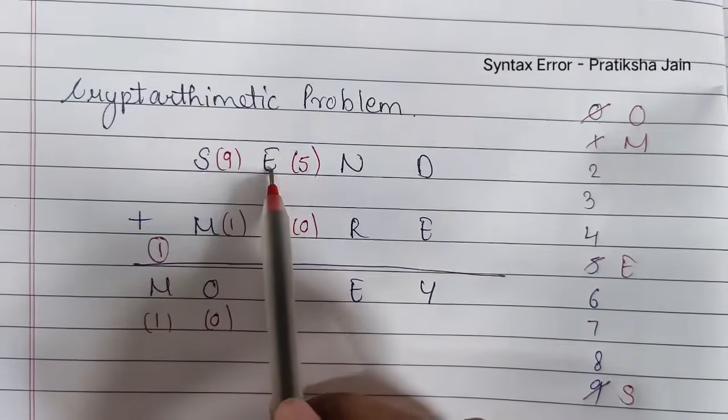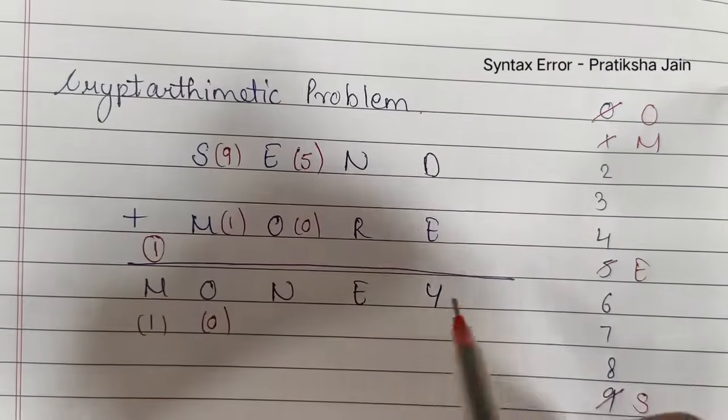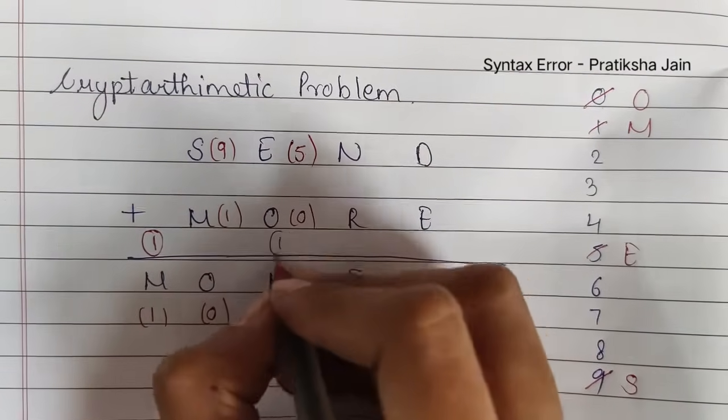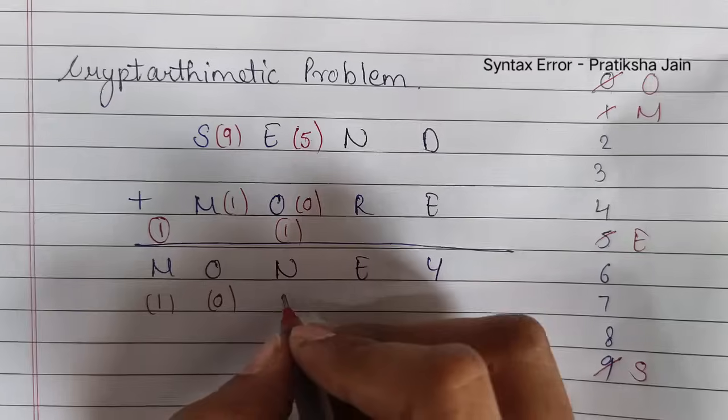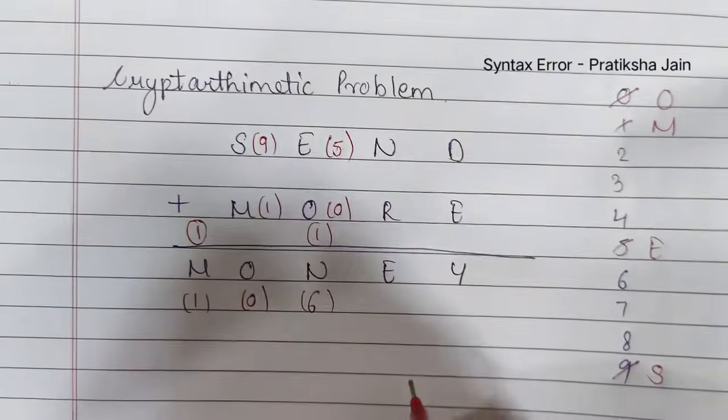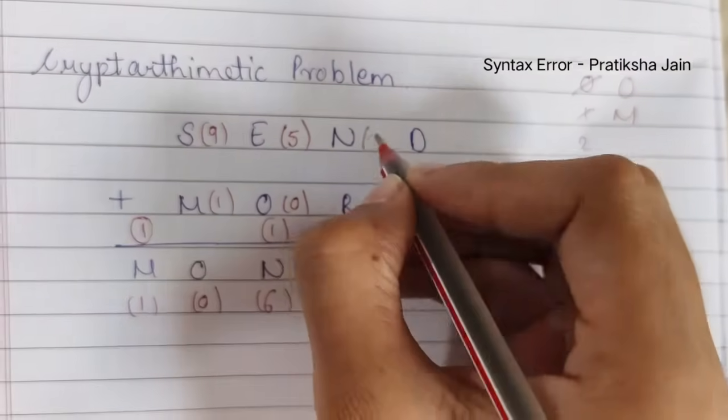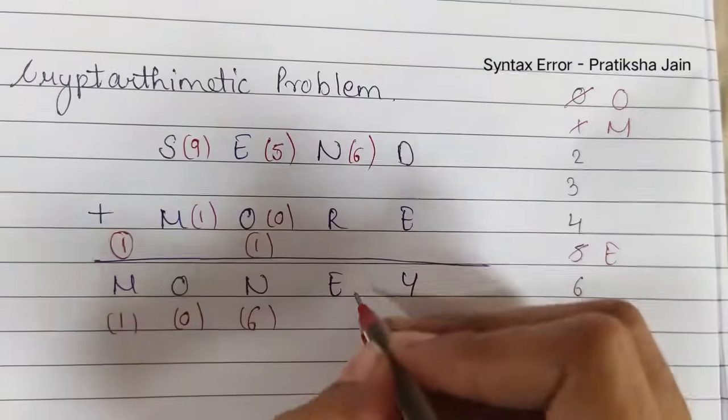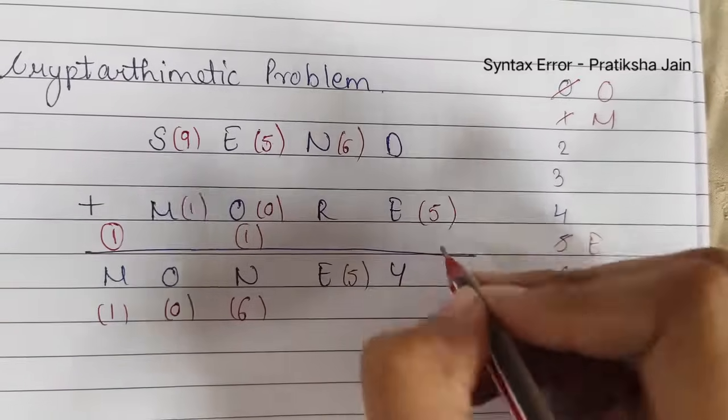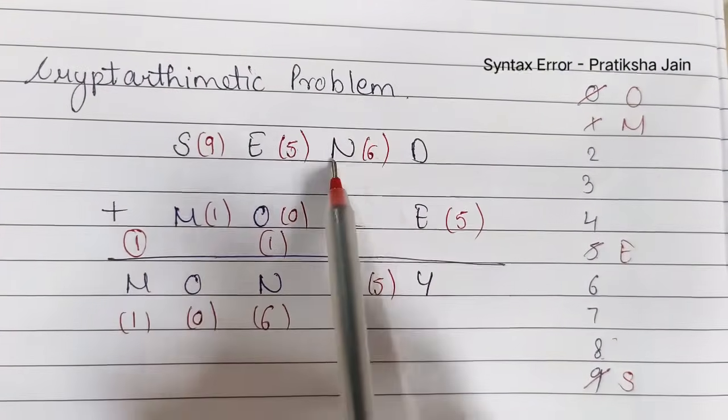Now let us assign E as 5. So 5 plus 0 gives me 5. So there should be a carry. So 5 plus 1 gives me 6. So N became 6. E became 5. Now we have N as 6.